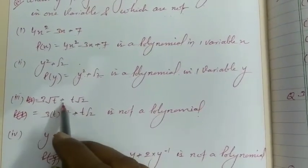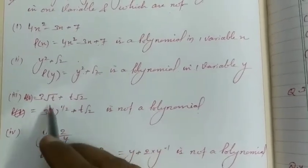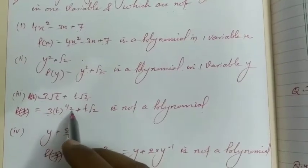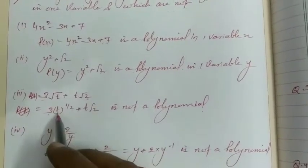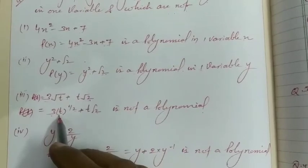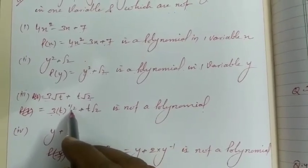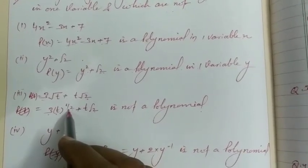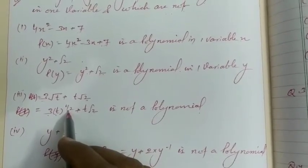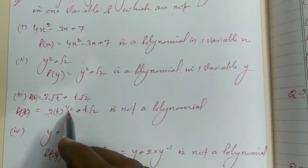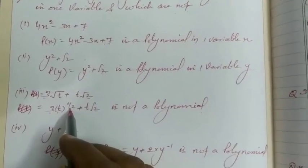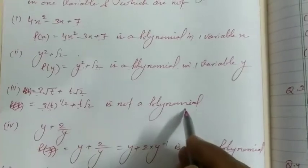Third part: t√t + t√2. When you simplify this, you get t^(1) · t^(1/2) + t√2, which gives t to the power one-half plus t√2. Here the power of t is a fraction, not a positive integer. Whenever the power of a variable is in fraction or negative, the expression is not a polynomial. So this is not a polynomial.